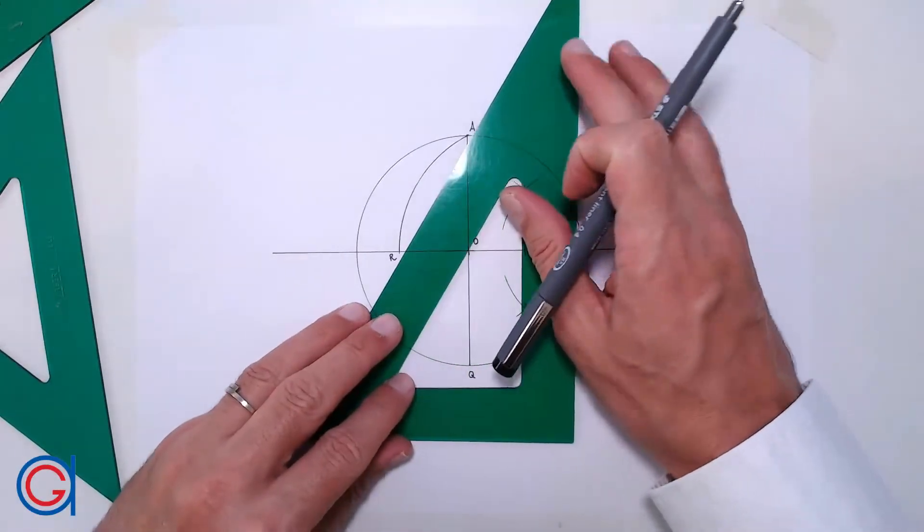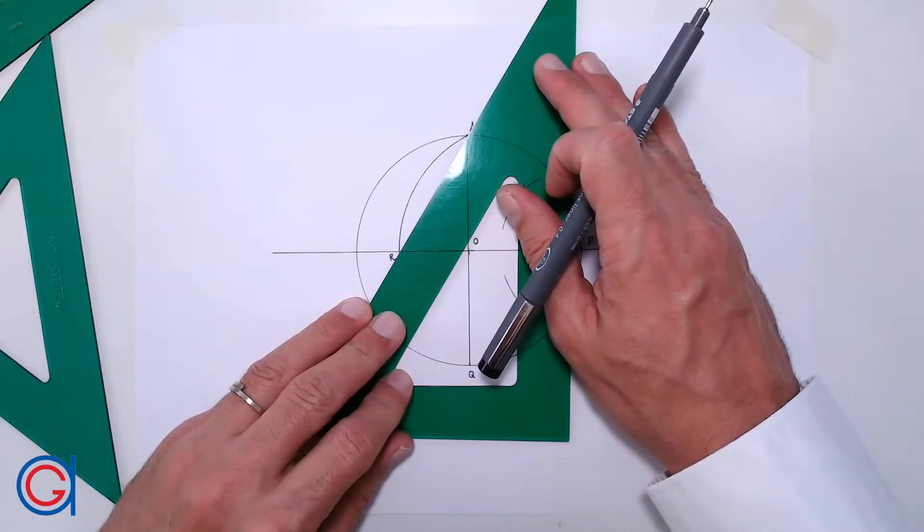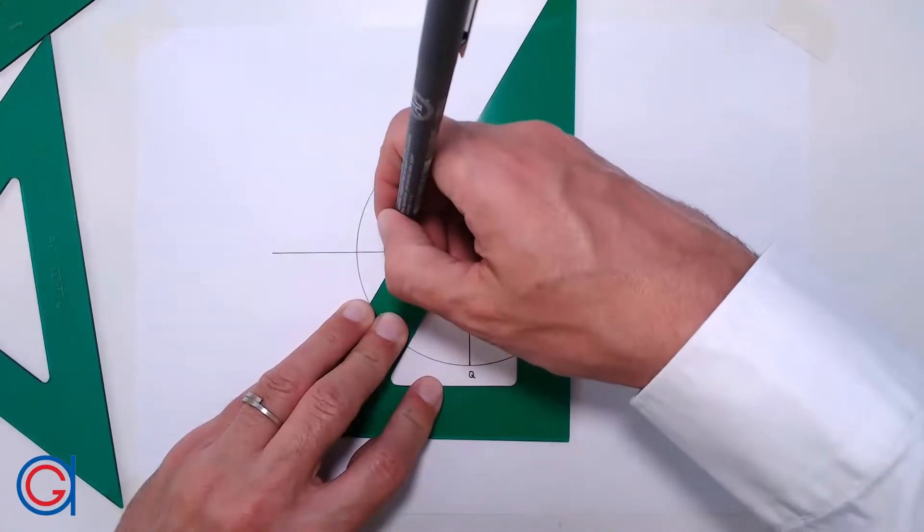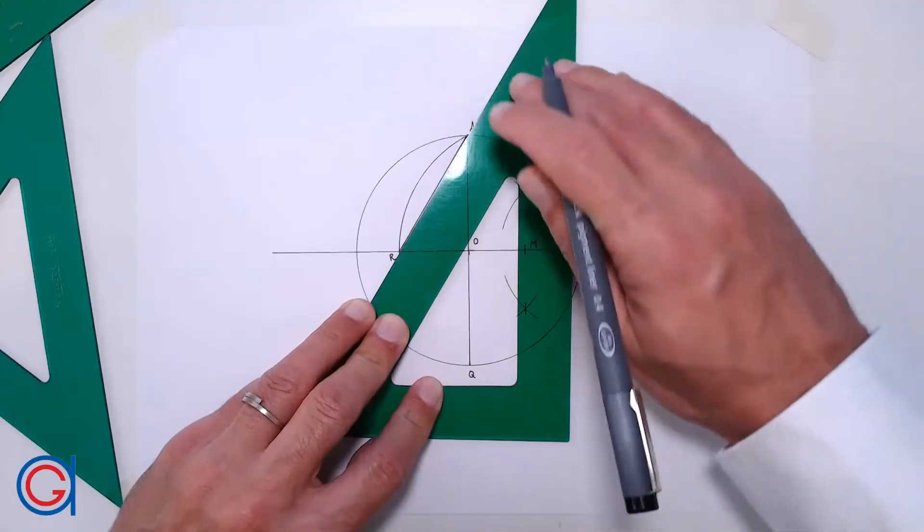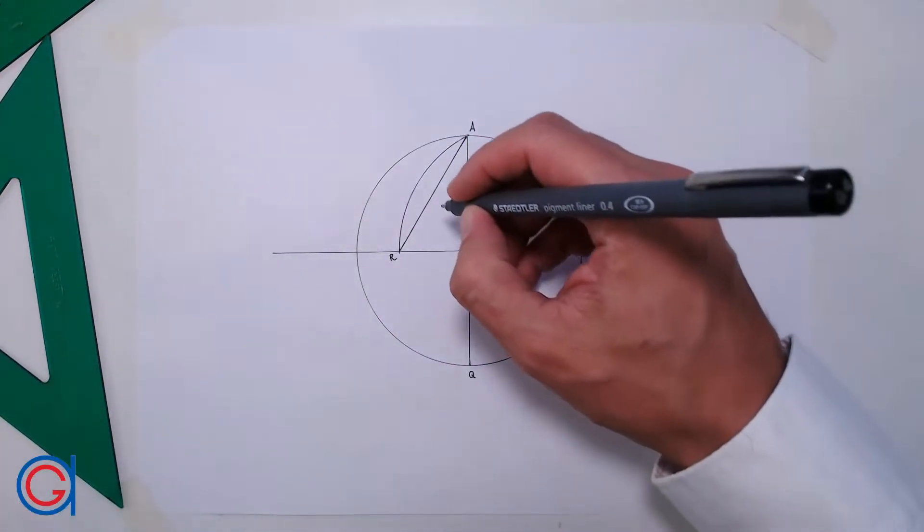Now, with our ruler, we join point R to point A, and this line segment RA will be the length L of one side of the rectangular pentagon that we want to draw.